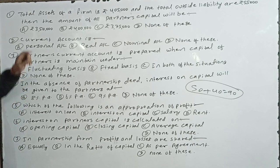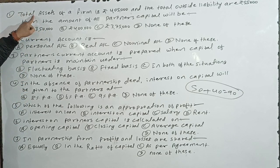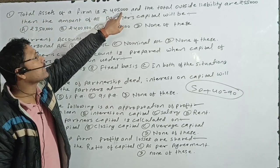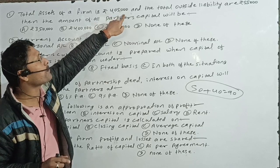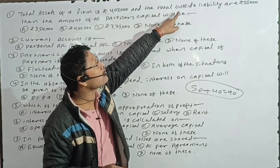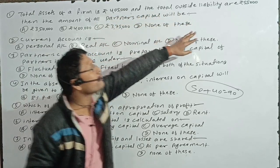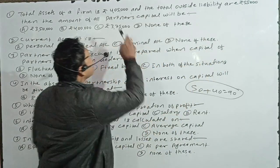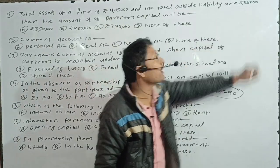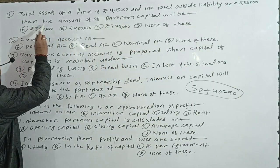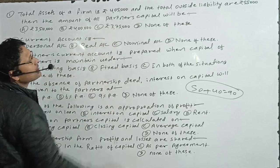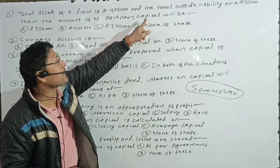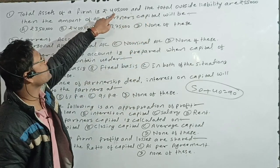Let's see the first question. The total assets of a firm are 4,500,000 and the total outside liability is 55,000. Then the amount of all partners' capital will be — tell me. What is the capital? Capital equals assets minus liability.